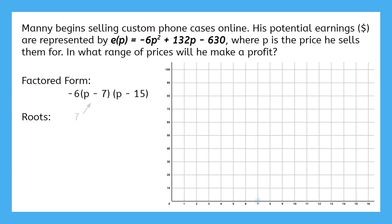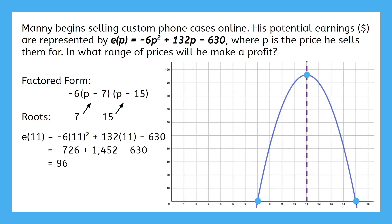It means the roots are at 7 and 15. We know that the line of symmetry will be in between those roots, and if we input that value, we get the vertex. We can graph the quadratic function.